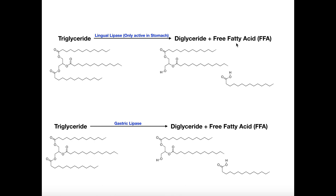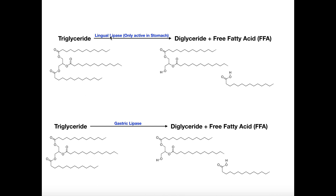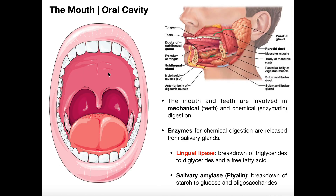One key point about triglycerides is that we are not going to be able to absorb them in this form, even though they are pretty small relative to most polymers — in fact, we don't even consider triglycerides polymers. We still can't absorb them; we have to break off all three of their fatty acids, and then we'll be able to absorb the individual fatty acids. So we have a twofold lipase activity in the stomach: gastric lipase from chief cells, and lingual lipase that came from the bolus of food in the mouth, secreted by those intrinsic salivary glands.